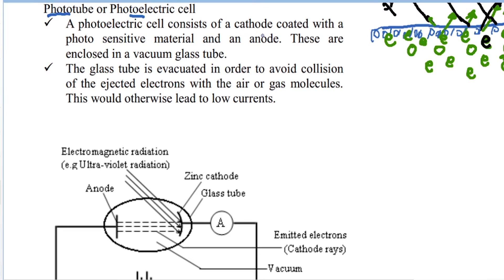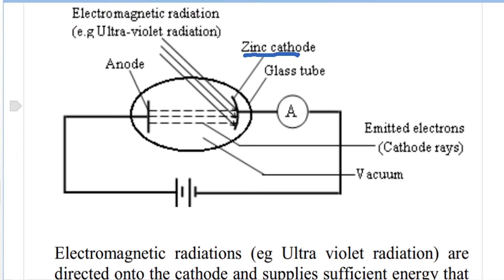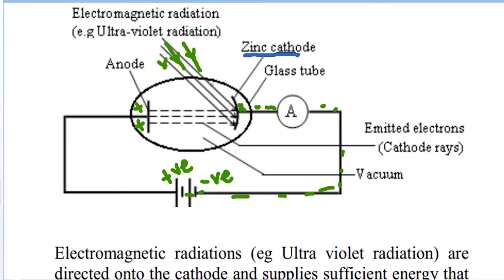A photoelectric cell consists of a cathode coated with photosensitive material — here we have a zinc cathode. A cathode is connected to the negative terminal, while the anode is on the positive side. Radiation falls onto the cathode surface, photoelectric emission takes place, and electrons are emitted.